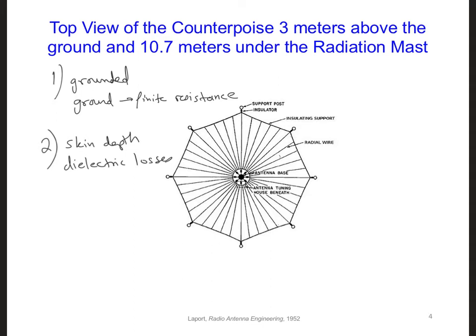In other words, counterpoises are often very useful because they provide a lower loss resistance and also less dielectric losses than the underlying ground would provide. And both of these characteristics allow for more of the transmitter power to be radiated.